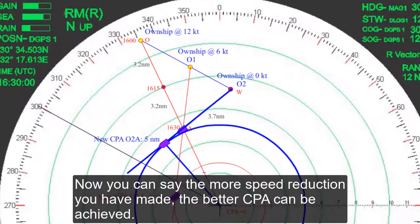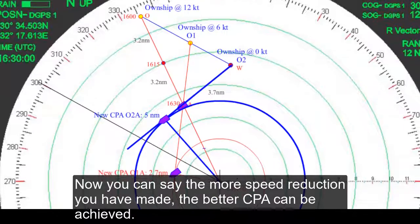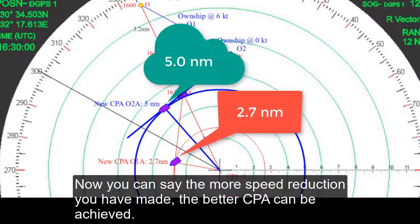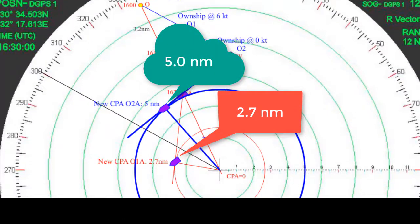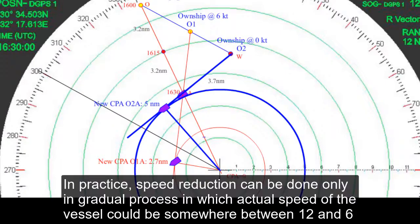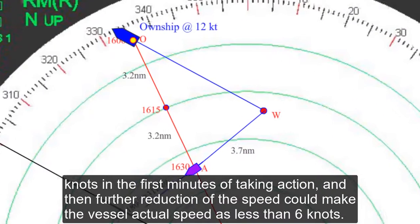Now you can say the most speed reduction you have made, the better CPA can be achieved. In practice, speed reduction can be done only in gradual process, in which accurate speed of the vessel could be somewhere between 12 and 6 knots in the first minutes of taking action.